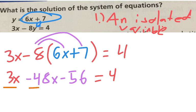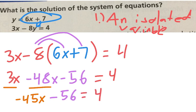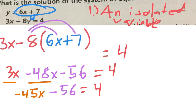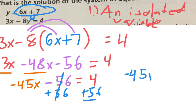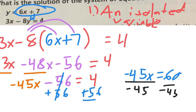So what is 3x minus 48x? Negative 45x. Now, how many variables do I have? One. So get it by itself. So add 56. So that tells me negative 45x equals 60. Divide by negative 45. So x equals negative 4 over 3. Negative 4 thirds.